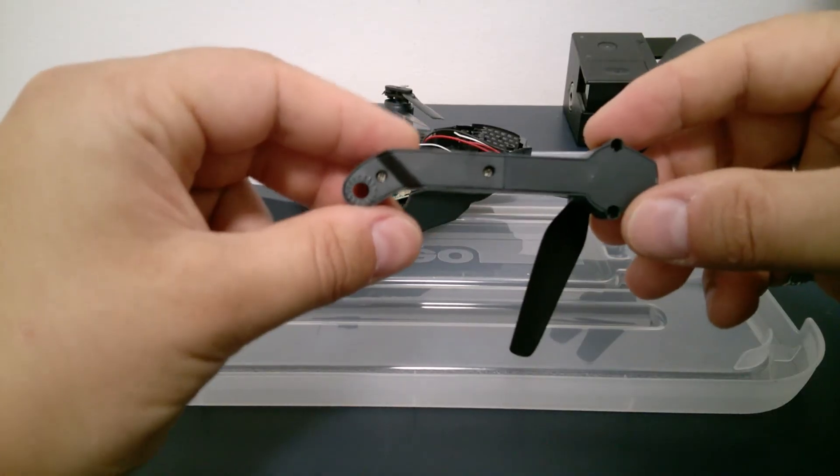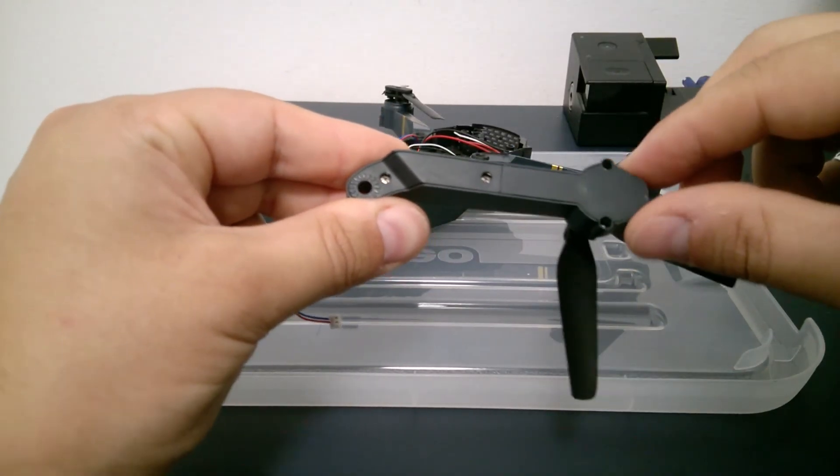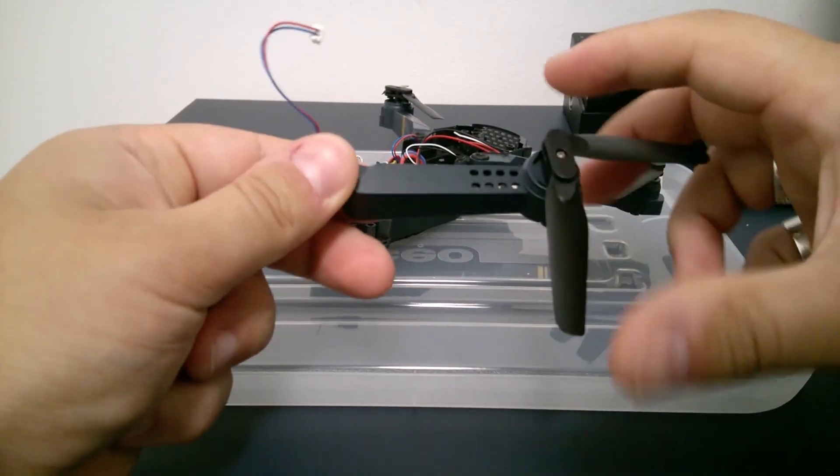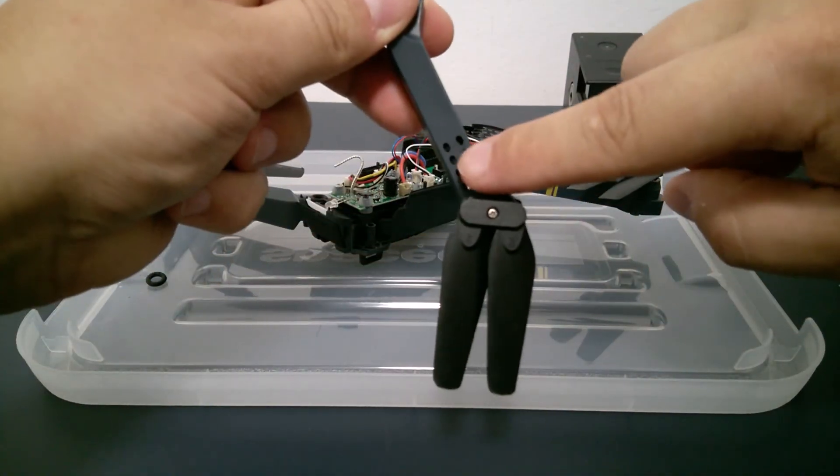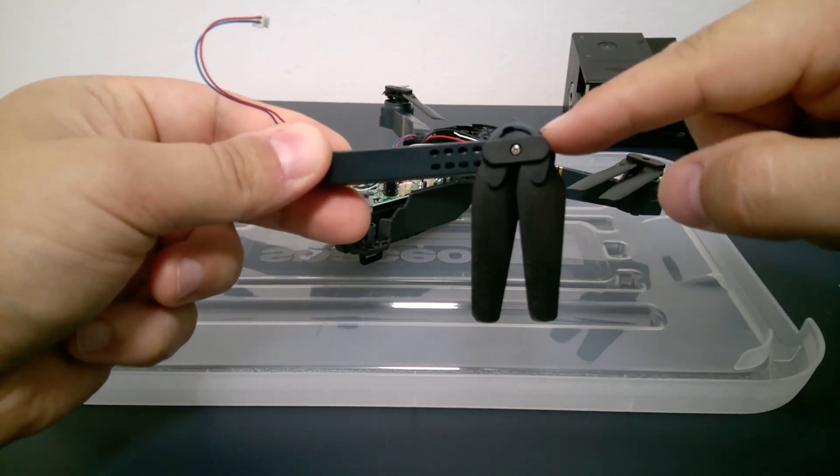The next thing to do is to unscrew those small screws to have access to the inside of the arm. Because I think that the sand should be stuck somewhere inside of the gears.